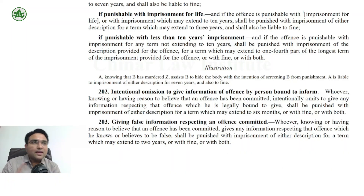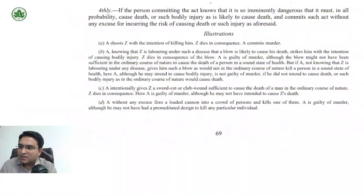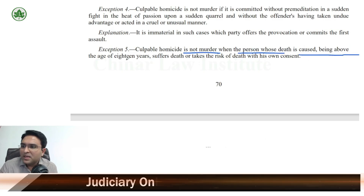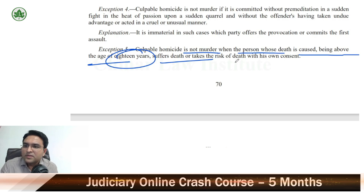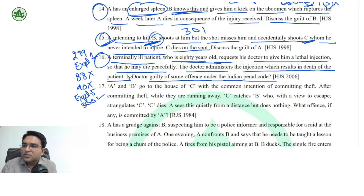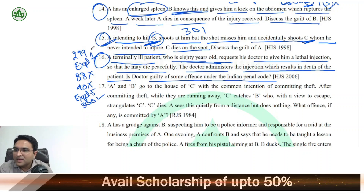This is a case of active euthanasia. You also need to explain what euthanasia is. The most important provision is Exception 5 of Section 300: 'Culpable homicide is not murder when the person whose death is caused, being above the age of 18 years, suffers death or takes the risk of death with his own consent.' So Exception 5 applies, and the doctor's liability will be culpable homicide not amounting to murder under Section 304 IPC. It is a big question — explain all provisions.